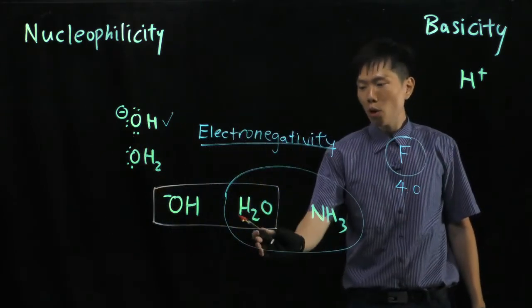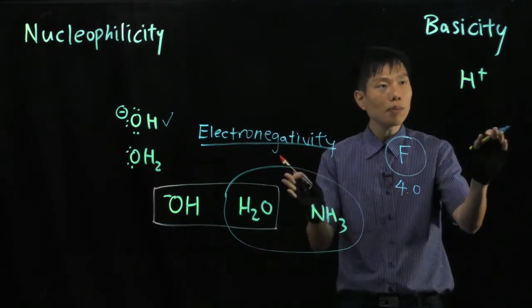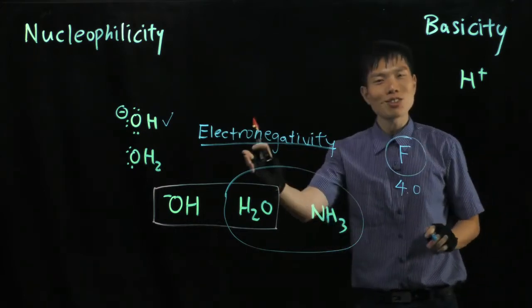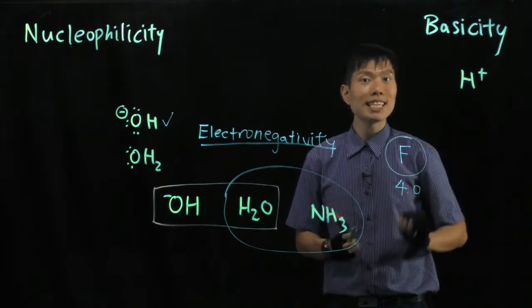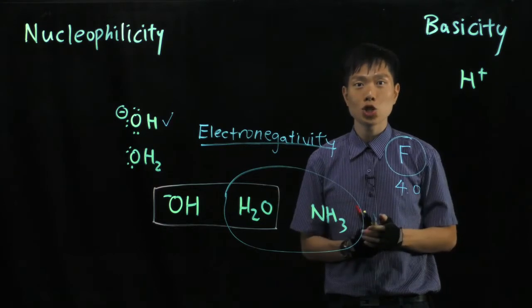Now the other group, water against ammonia. Both are not charged, so I can't talk about charged attractions. But what I can talk about is electronegativity. So nitrogen is the third most electronegative element of the periodic table after fluorine, after oxygen.